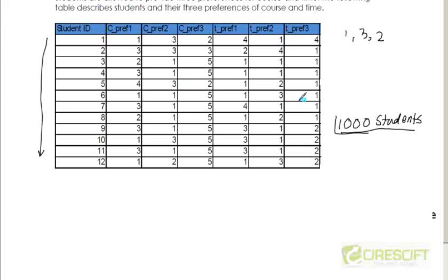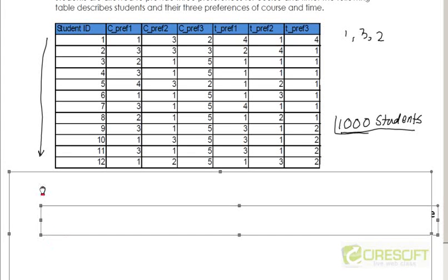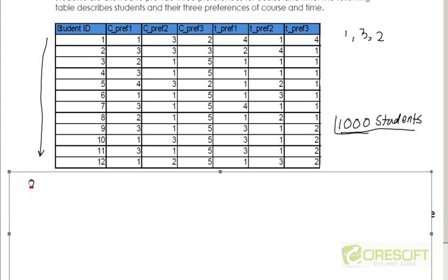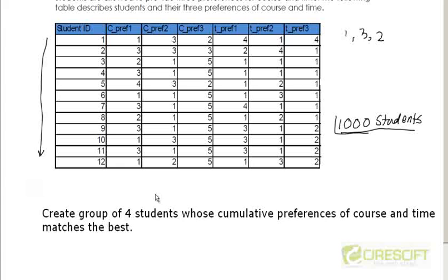Therefore, you populate 1000 users, 1000 students with different kinds of random preferences of courses and time. Then once you are done with that, what I am asking you is: can you give me a group? So out of this, create a group of four students whose cumulative preferences of course and time are the best.